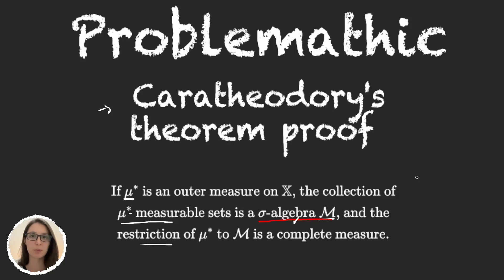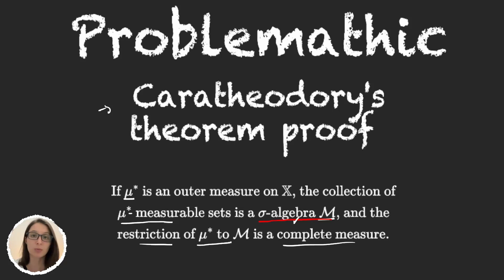In our last video we started the proof for Carathéodory's theorem. We proved that the collection M of μ* measurable sets for an outer measure μ* was a sigma algebra. Now in this video we will prove that the restriction is actually a complete measure. For this we have to prove two things: first that the restriction is a measure, and once we have a measure, we have to prove that it is complete. If you don't remember what complete means, check out a previous video in this playlist.